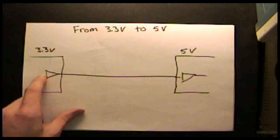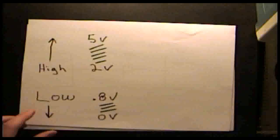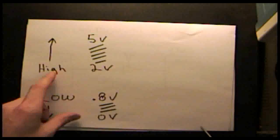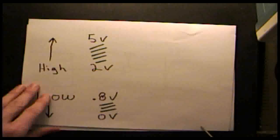When you drive from a 3.3-volt device to a 5-volt device, this is typically okay because the threshold voltages on a 5-volt device typically range between 0.8 volts for a low and 2 volts for a high.